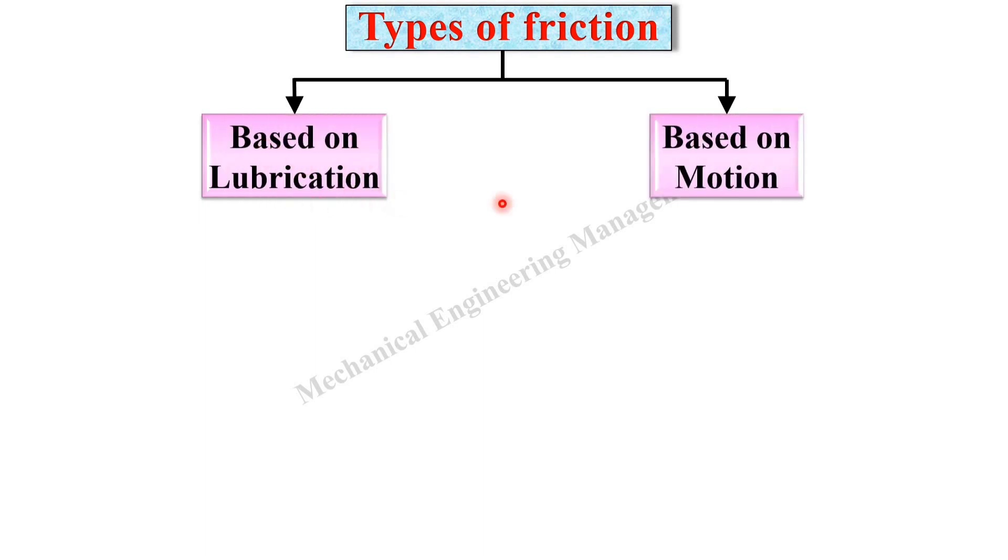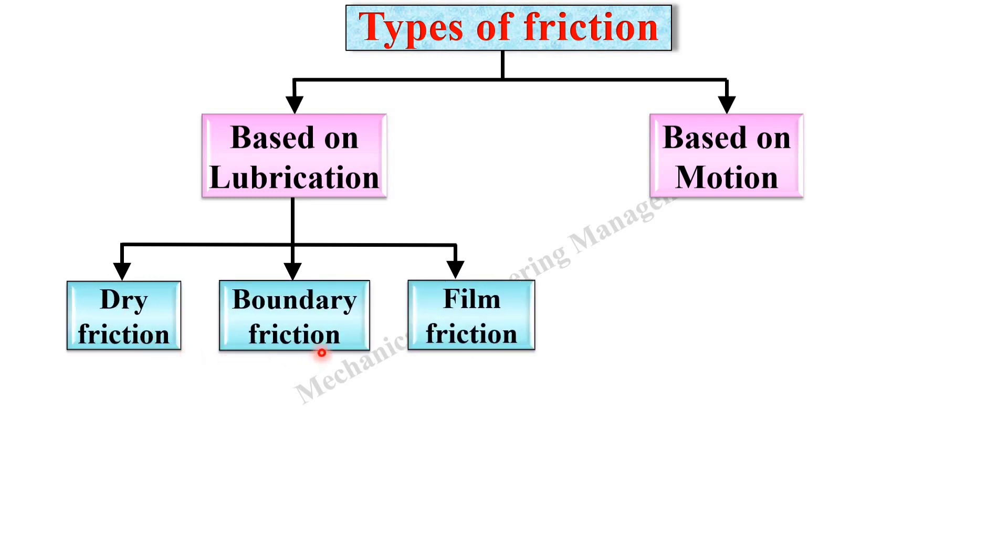Now, the last topic types of friction. Generally, you can classify the types of friction based on two different approach. First one based on lubrication and second one based on motion. Now, based on the lubrication you can classify the friction in three different categories: dry friction, boundary friction and film friction. Dry friction is subdivided in two types of friction: sliding friction and rolling friction.